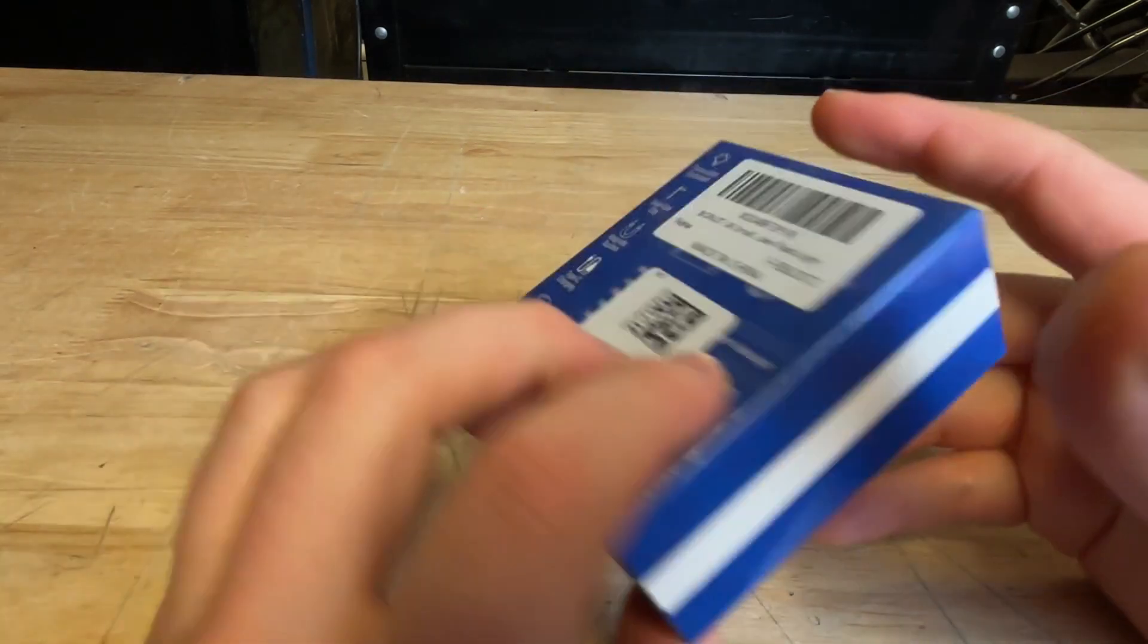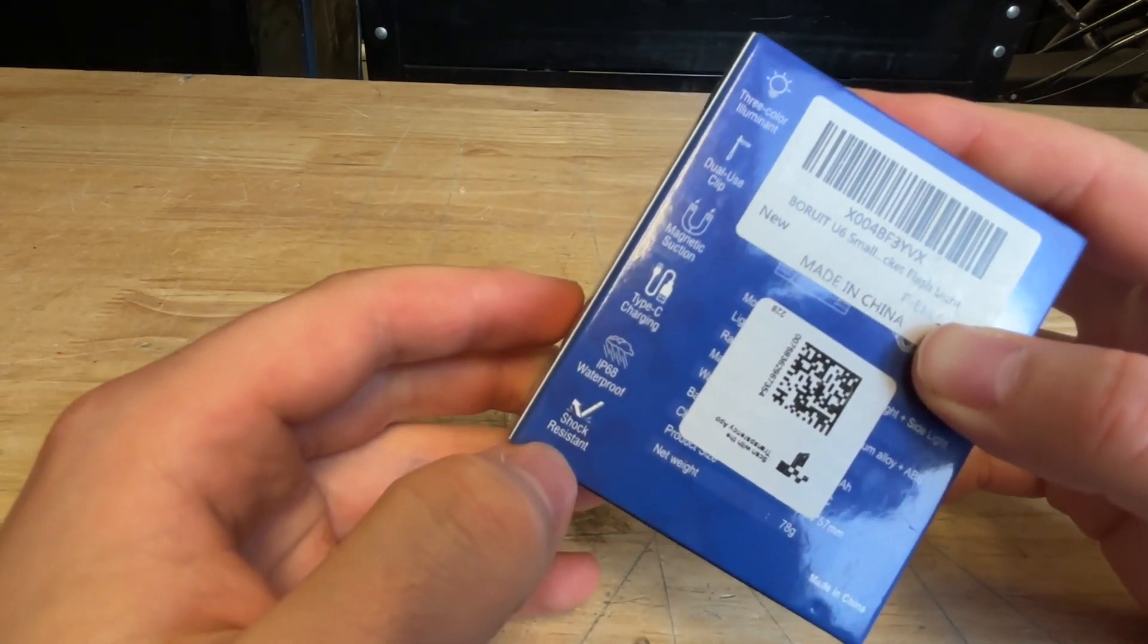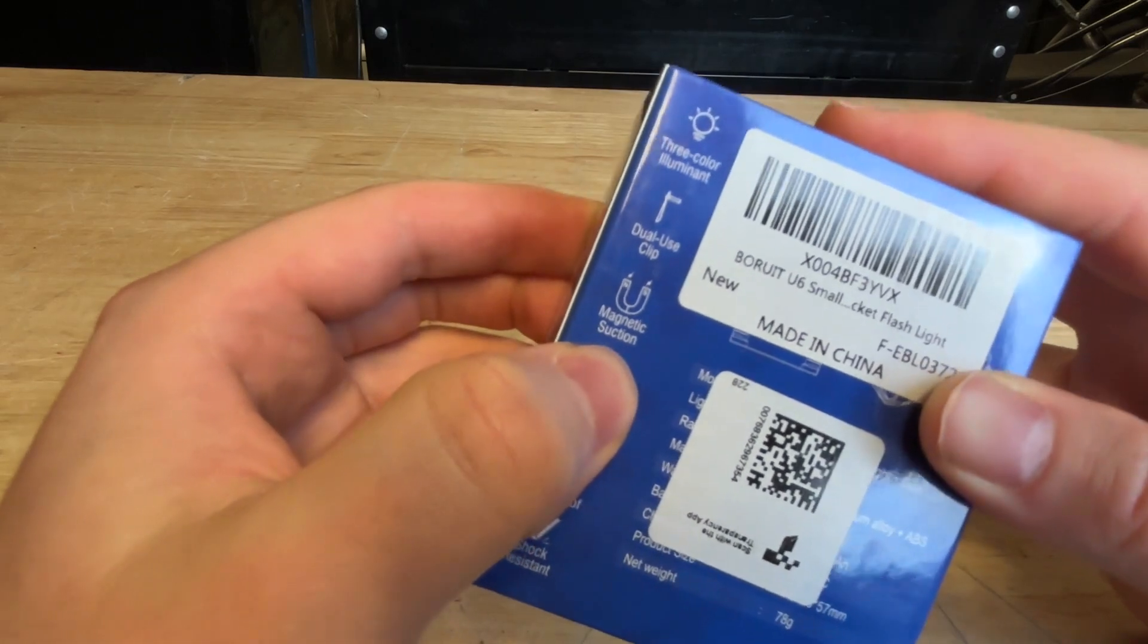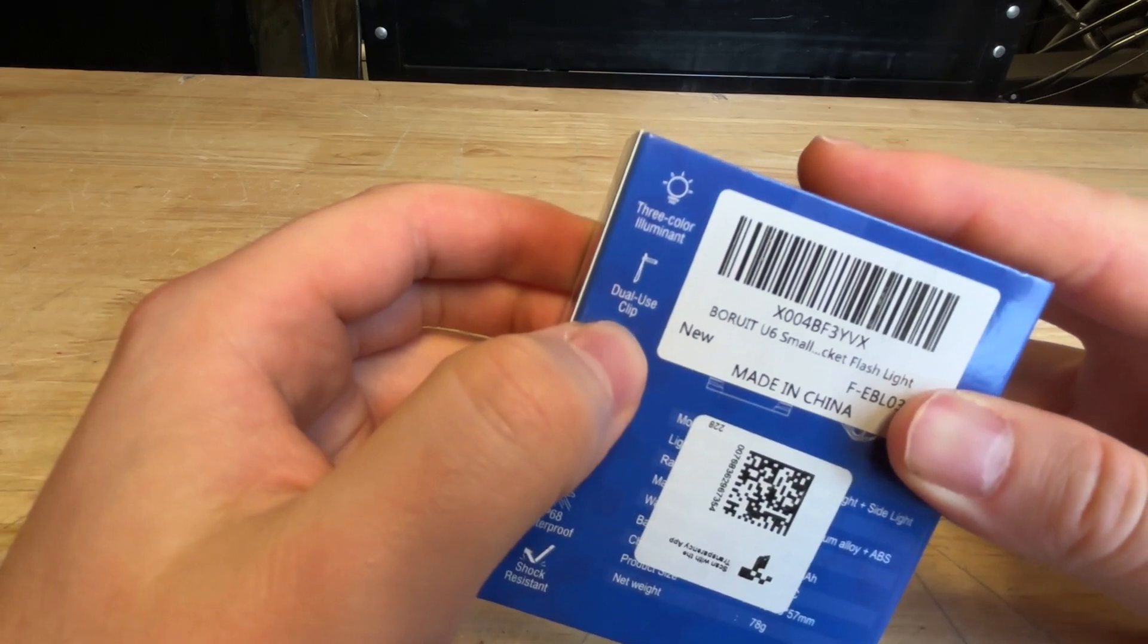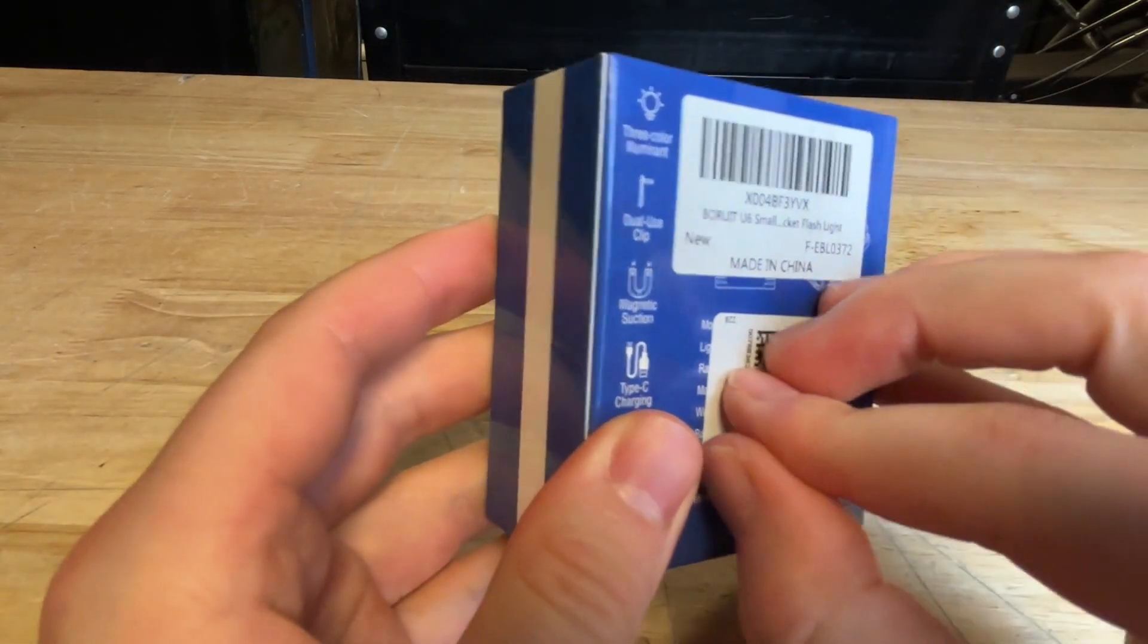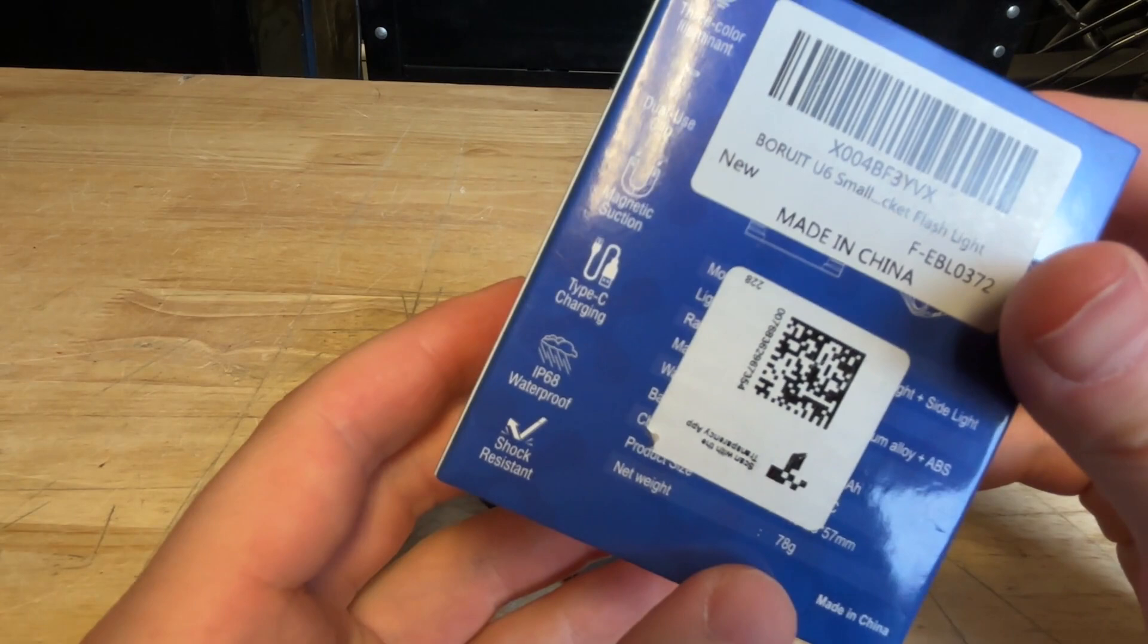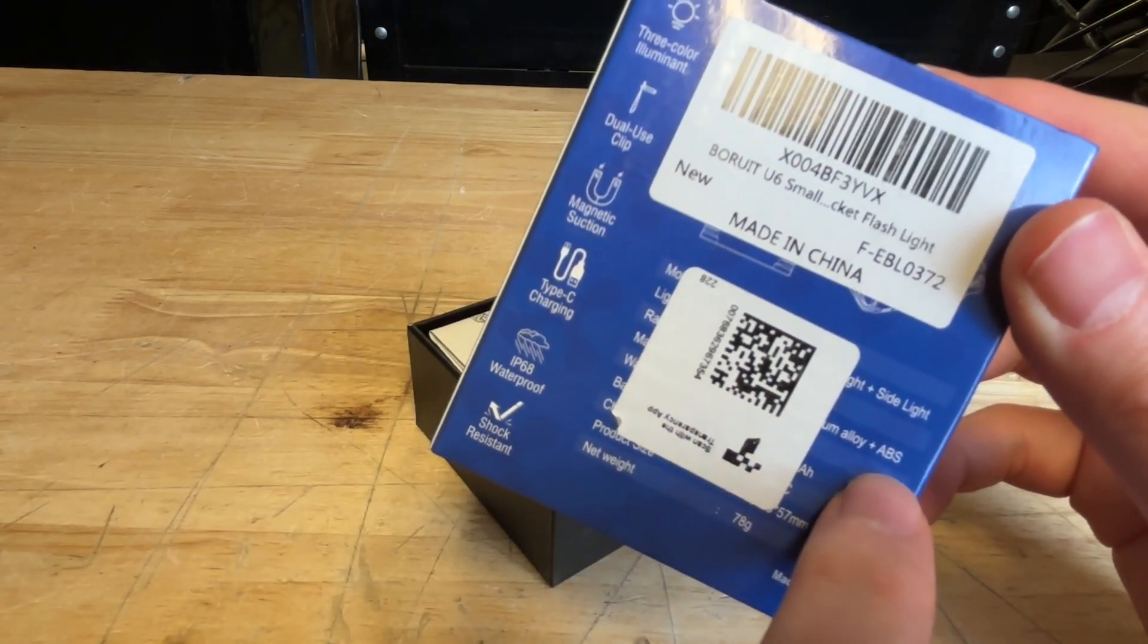It comes in right under $50, and this is going to be kind of an interesting tactical utility light. There's a lot of different names and designs for these flashlights. 1600 lumens, and it's claiming to be IP68 waterproof. We're going to test that, actually. And then shock resistant, also going to test that too. Magnetic suction, dual-use clip, three-color illumination.